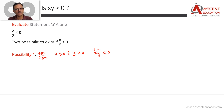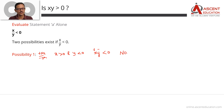If the product XY is negative, what is the answer to the question 'Is XY greater than 0?' XY is less than 0, so it is not greater than 0. The answer is no. So in possibility 1 — numerator positive, denominator negative — the answer is no.